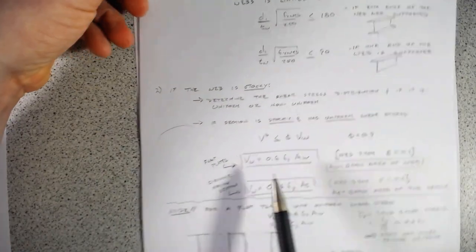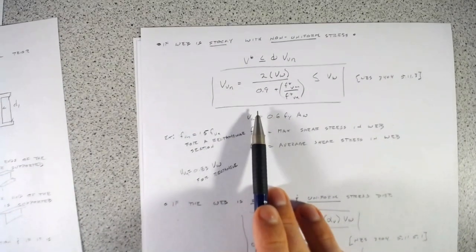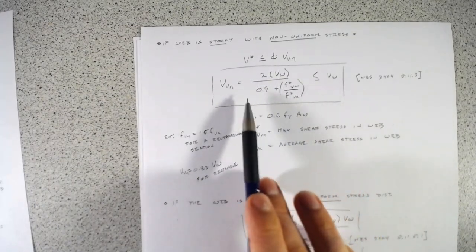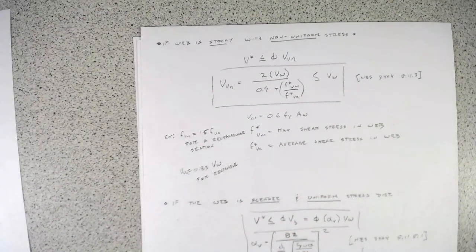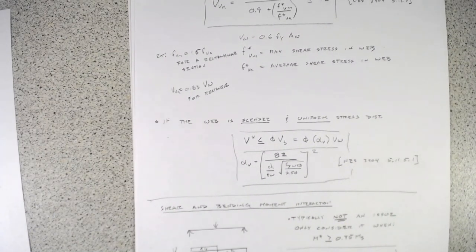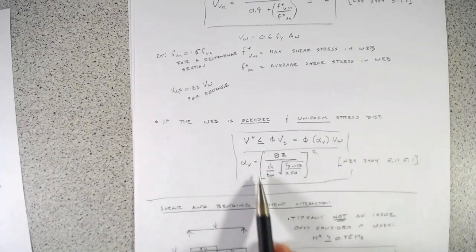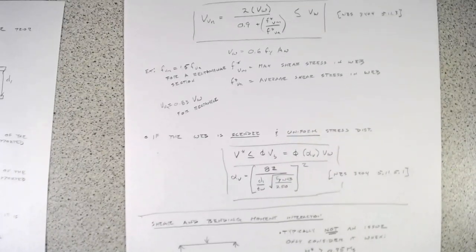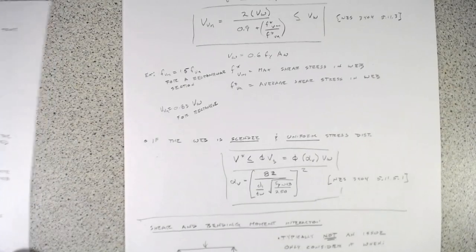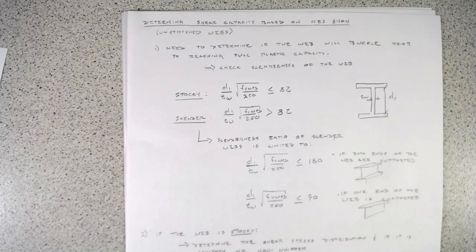Quick recap: uniform and stocky gives 0.6 × Fy × Vw; stocky and non-uniform modifies that by the maximum-to-average shear stress ratio; slender and uniform modifies the stocky result using the αv slenderness factor. We'll follow up with worked examples to put these equations into practice. Thanks for watching.